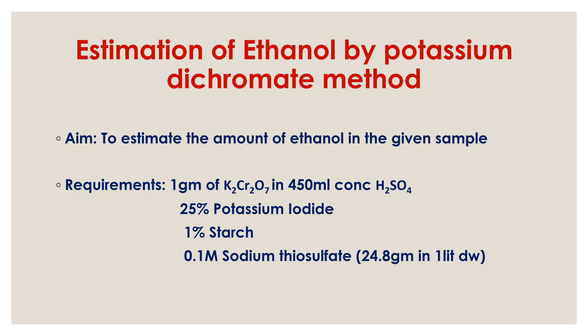Hello everyone. This is about our new topic: estimation of ethanol by potassium dichromate method. Today we are discussing how to estimate the ethanol using potassium dichromate. This method is a titration method. Our aim is to estimate the amount of ethanol in the given sample. For this we need some requirements.